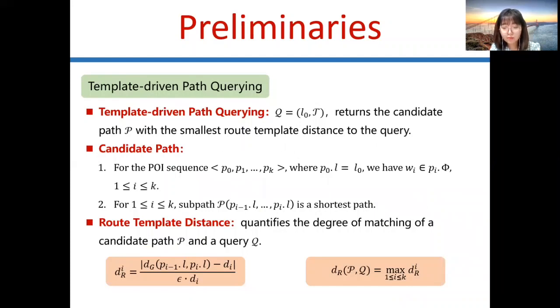For template-driven path query, we define the template as a two-tuple of a POI keyword and distance value. Given a query including the origin and template sequence, the template-driven path query returns the candidate path P with the smallest route template distance to the query. The route template distance quantifies the degree of matching of a candidate path P and a query queue.